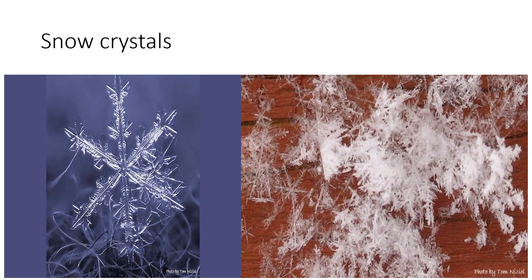Another example of molecular assembly is snow crystals. A snowflake begins to form when an extremely cold water droplet freezes onto a pollen or dust particle in the sky, creating an ice crystal. As the ice crystal falls to the ground, water vapor freezes onto the primary crystal, building new crystals — the six arms of the snowflake. The ice crystals that make up snowflakes are symmetrical because they reflect the internal order of the crystal's water molecules as they arrange themselves into a six-sided snowflake. A snow crystal is a natural blend of science and art.